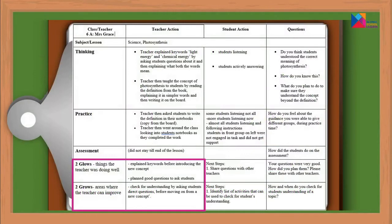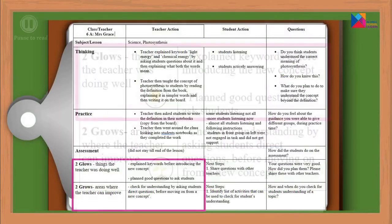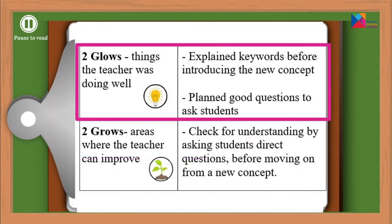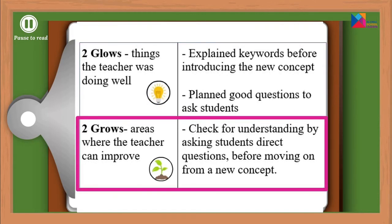Let's look at the same example as before and let me zoom into the glows and grows section. In this case, the teacher explained key words in the text before introducing a new concept, which is always a good practice. She also asked the students questions about it, which means they had an opportunity to engage actively and were not just silently listening. These are the glows for this teacher — things she did well. However, the teacher read and explained the definition of photosynthesis and asked the students to write it down, but didn't ask them any follow-up questions before moving on. We feel that this could be improved — she could have asked a few questions to check for understanding by having students explain what they understood in their own words. So the growth for this teacher becomes: check for understanding by asking students direct questions before moving on from a new concept.